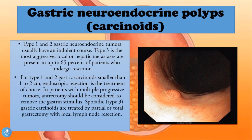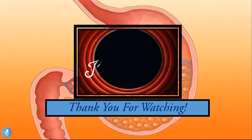Type 1 and type 2 tumors usually have an indolent course. Type 3 is the most aggressive — local or hepatic metastasis are present in up to 65% of patients who undergo resection. For type 1 and type 2 carcinoids smaller than 1 to 2 centimeters, endoscopic resection is the treatment of choice. For multiple progressive tumors, antrectomy should be considered. Type 3 sporadic carcinoids are treated by partial or total gastrectomy with local lymph node resection.